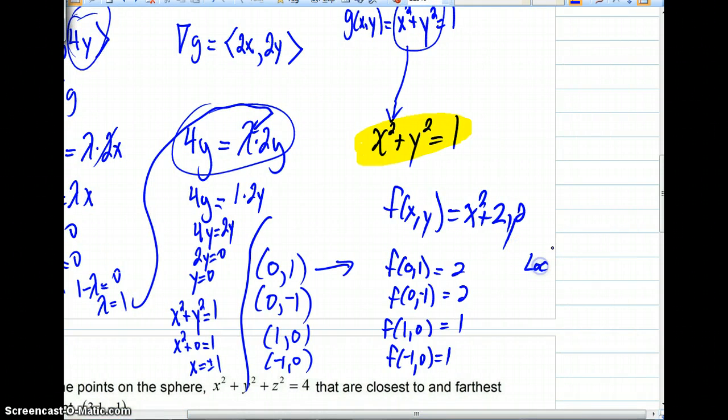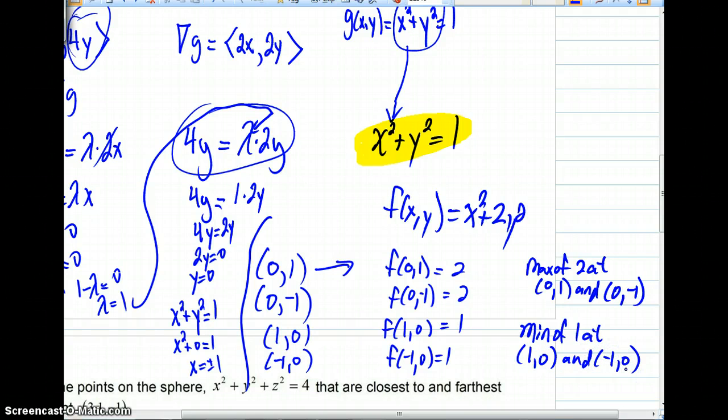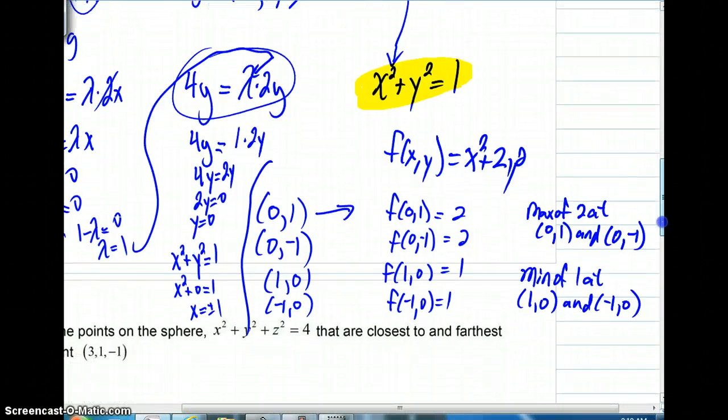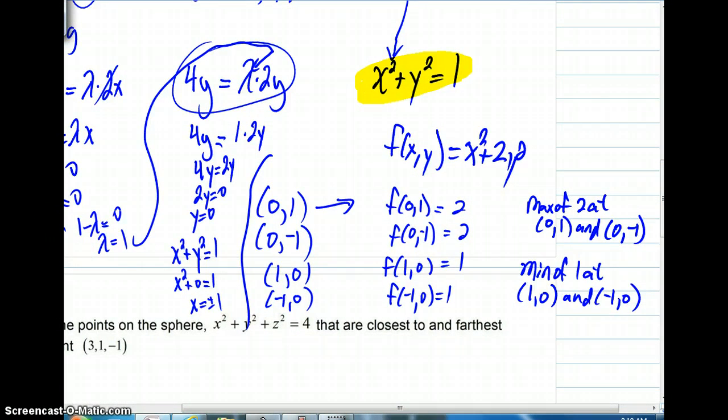What are we seeing? Well, we have a local max, or we could just actually call it a max of 2 at 0, 1 and 0, negative 1. We could certainly call that a local max. We've got a min of 1 at 1, 0 and negative 1, 0. Okay, we're going to stop here and actually go to the second problem in our second video, but hopefully you can see where we're going with this.